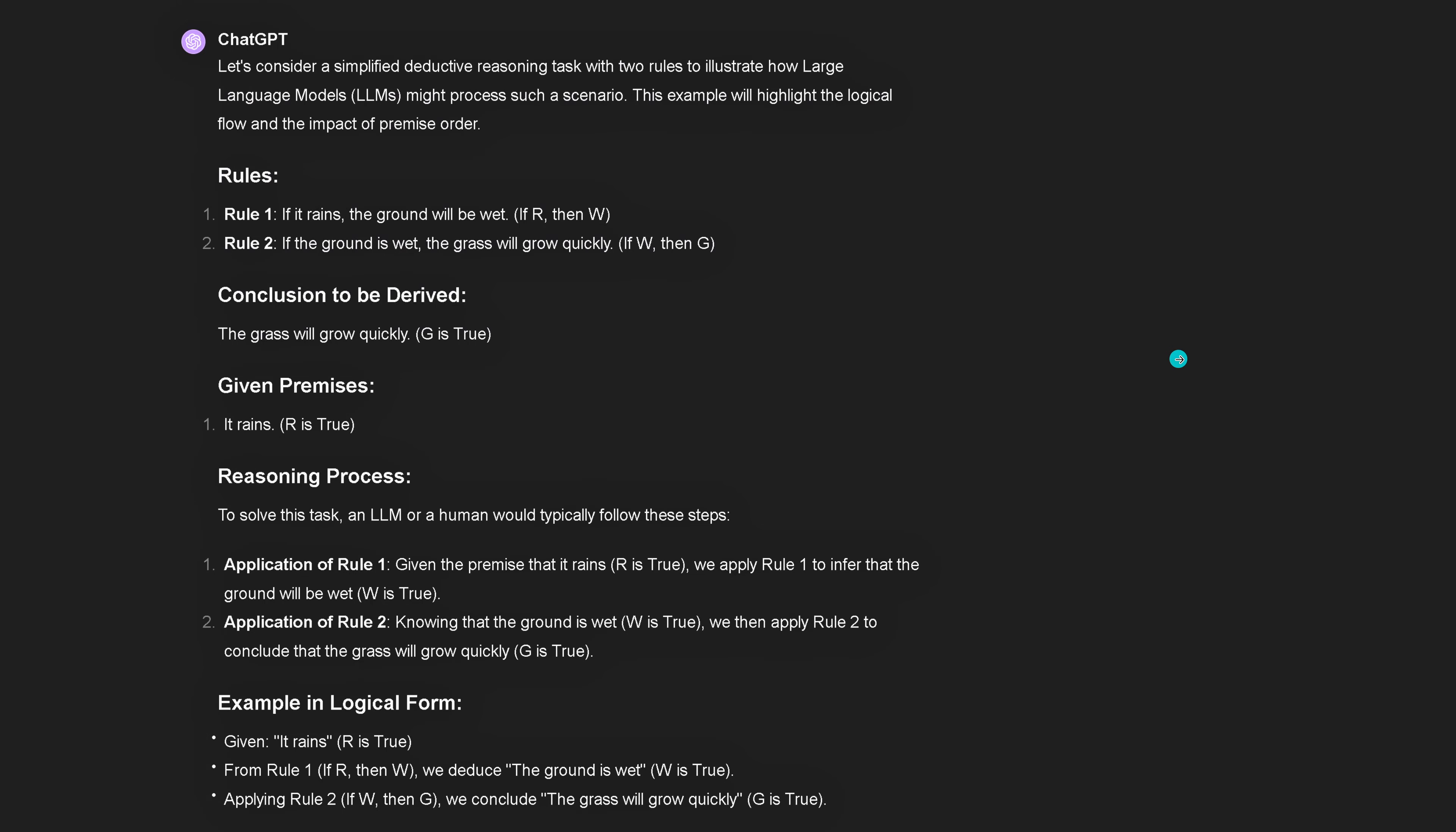For my younger viewers here, I asked GPT-4, show me an example with two rules: if R, then W; if W, then G. So we have two logical rules, conclusion to be arrived, premise, reasoning process, logical form if you want to go there step by step. Beautiful.